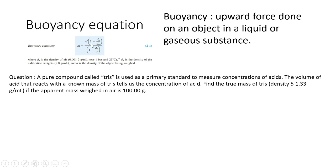The buoyancy equation is m with a caret equals 1 minus dA over dW divided by 1 minus dA over dO. dA is the density of air, which is 0.0012 grams per milliliter near 1 bar and 25 degrees Celsius - that's standard temperature and pressure. dW is the density of the calibration weight, which is 8.0 grams per milliliter. Notice the similarity of the units - this is very important when doing this kind of math. dO is the density of the object being weighed, so density needs to be in grams per milliliter.